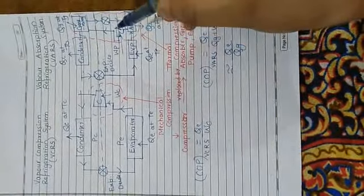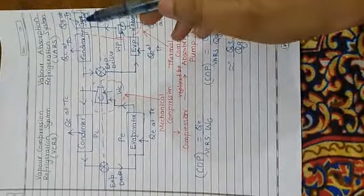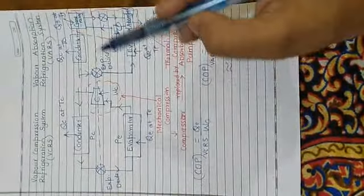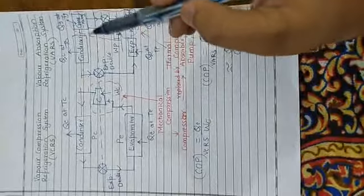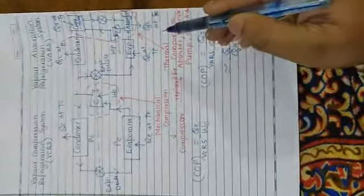Whereas in vapor absorption system, heat which is used in the generator is of low grade. Generally solar energy or waste energy is used. So there is thermal compression in vapor absorption system.